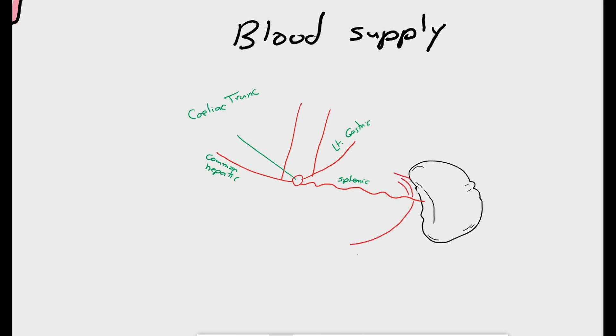Before it enters the splenic hilum, the splenic artery gives off the left gastroepiploic artery and the short gastric arteries that supply the stomach. Here we can see the tortuous course of the splenic artery on the upper border of the pancreas. It ends inside the spleen, as five to six end segmental branches.